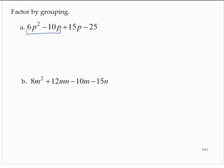The first two terms have a common factor of 2p. So I'll write the first two terms as 2p times 3p minus 5.